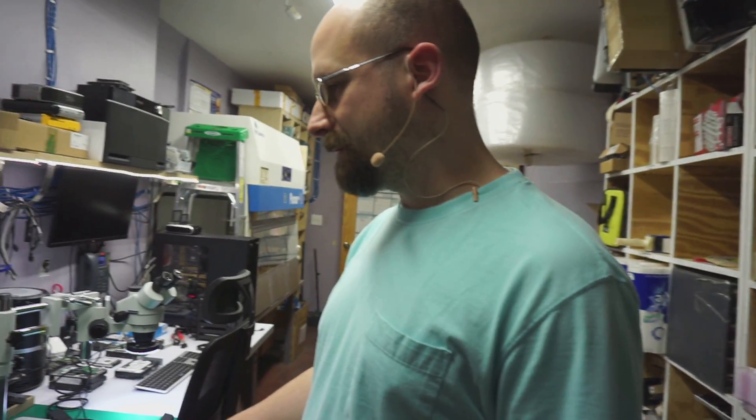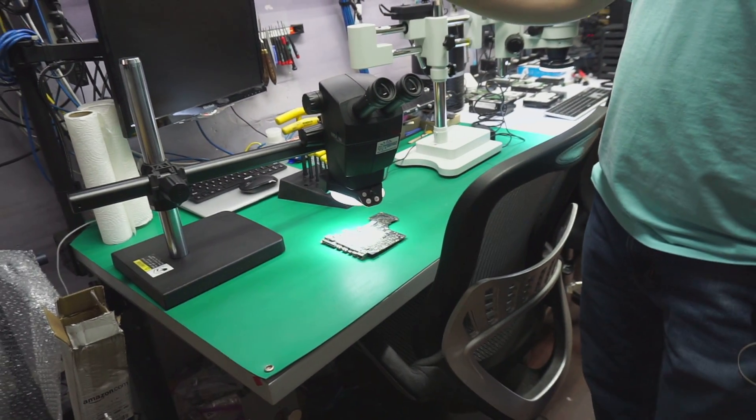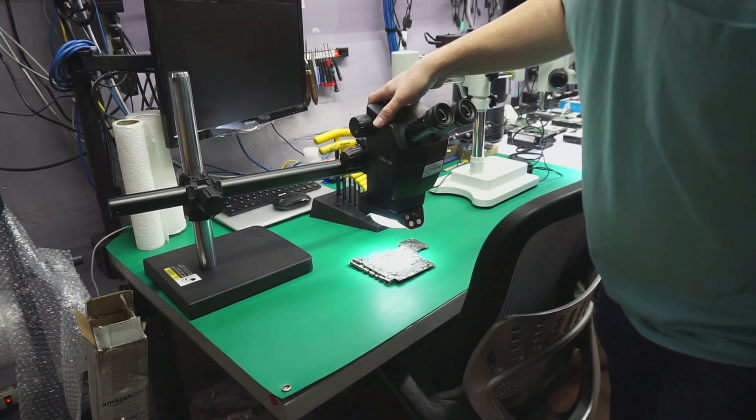What is it that we have here, Paul? So the first one here, what we have here to review, is the Leica A60, is that what it is?